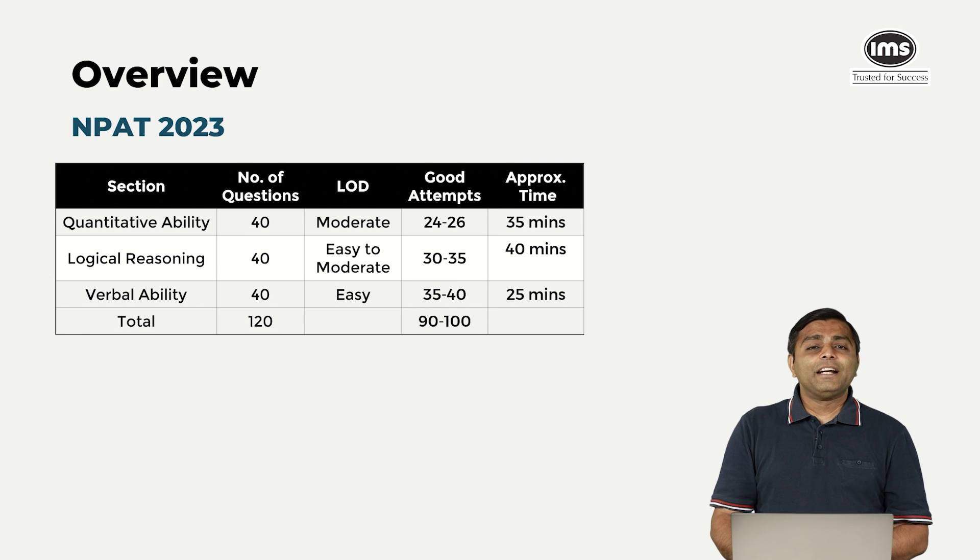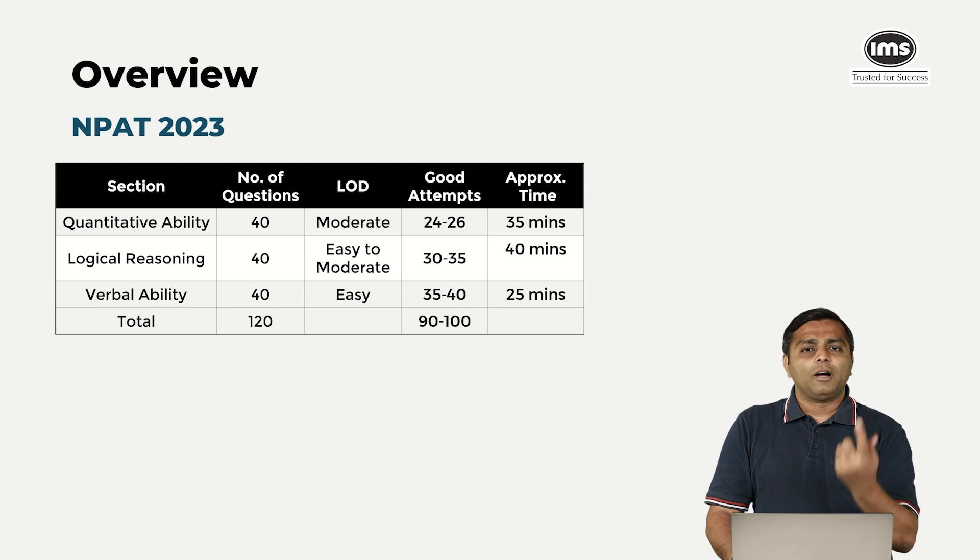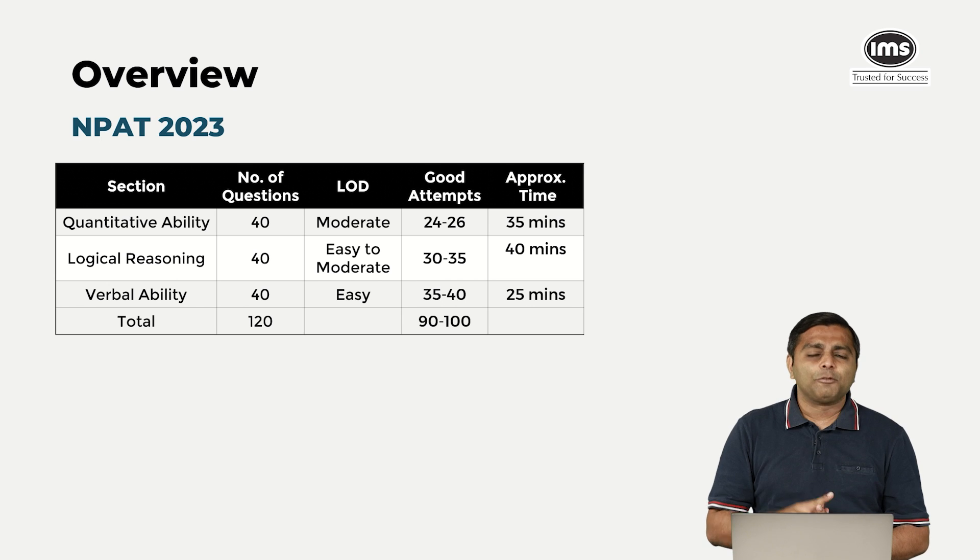So yeah, 90 to 100 would be good attempts out of 120. Assuming even 80 to 85 percent accuracy, a score of 80 to 85 should be good enough for you to be able to score a rank less than 2000. A rank less than 2000 in the final applications, I think, is safe for you to be able to get into a BBA course or a BCom honours course or even a BSc finance or a BSc economics course. In case you are applying for liberal arts, you will have to have a rank which is in thousands.